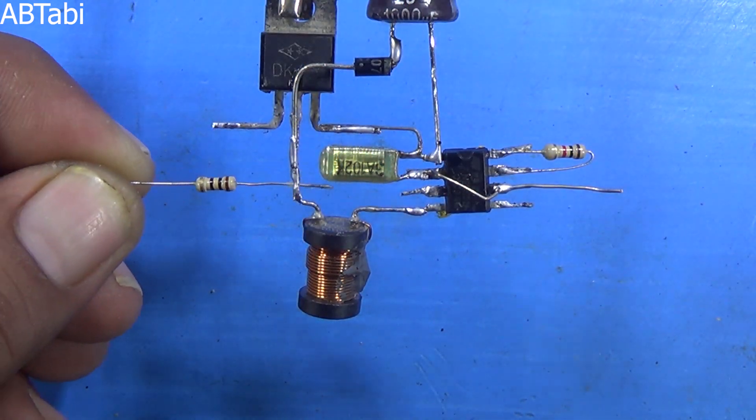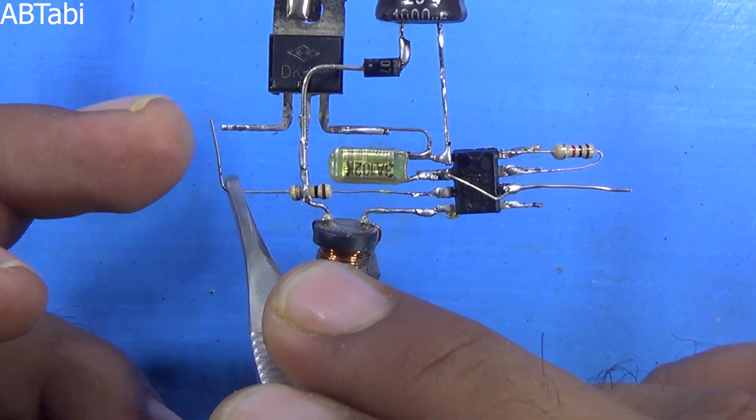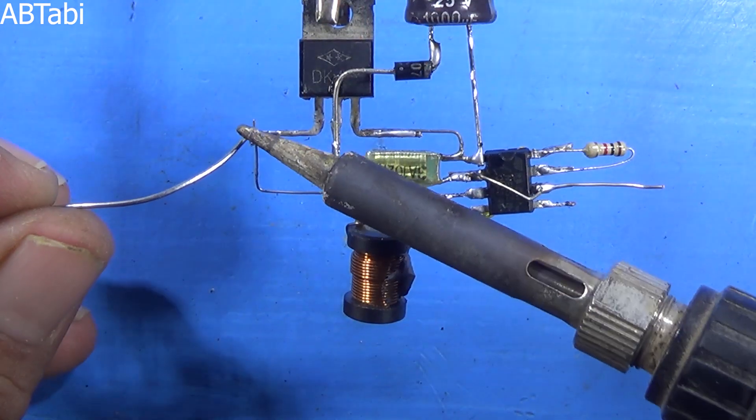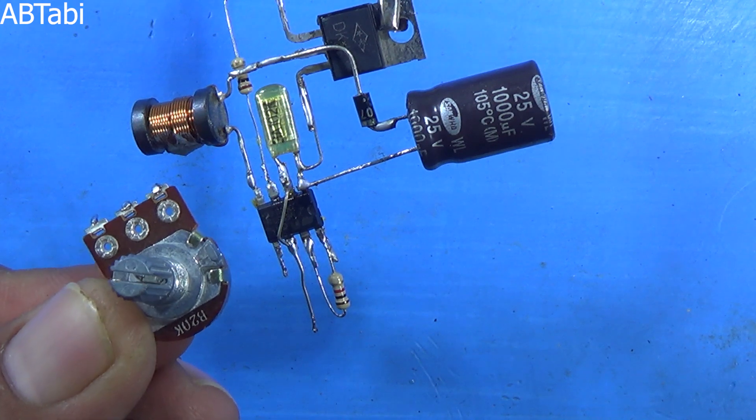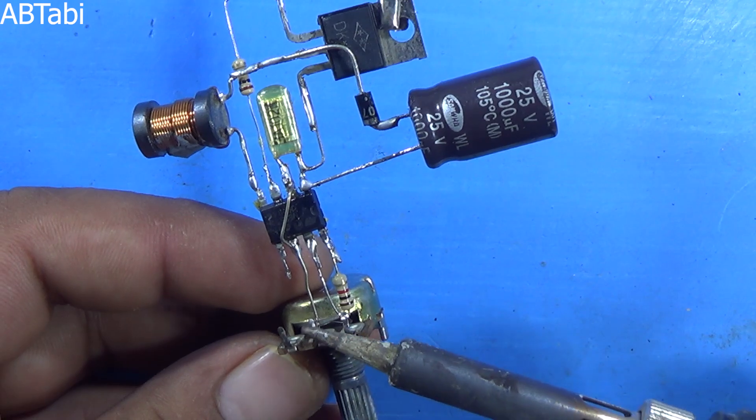1 ohm quarter watt resistor connects from IC pin 3 to transistor base. Potentiometer connects with IC pin 7 and 6 as shown in this project.